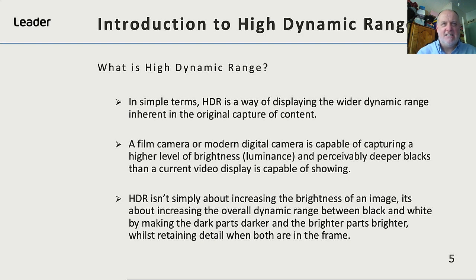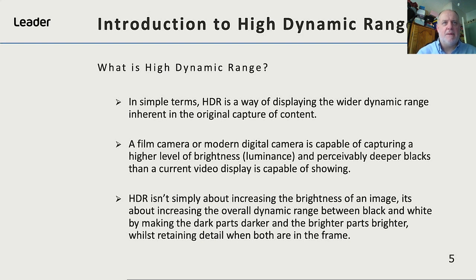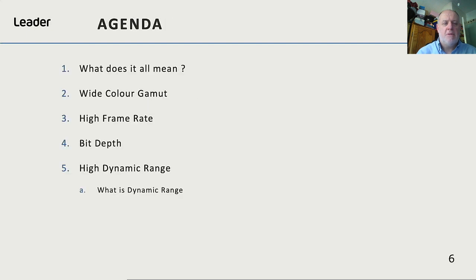HDR isn't simply about increasing the brightness of an image. It's about increasing the overall dynamic range between black and white by making the darker parts darker and the brighter parts brighter, whilst retaining detail when both are in the same frame. But to understand high dynamic range, you have to have a reference. So what is dynamic range?